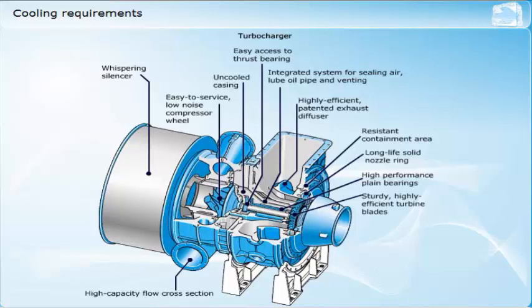Many of the latest generation of turbochargers have uncooled turbine casings, which reduces the total heat losses of the engine and increases overall thermal efficiency. With this design, lubrication is usually taken from the main engine lubricating oil system, and the circulating oil carries away the heat from the bearings. Exhaust side casings have to be well insulated for the protection of personnel.